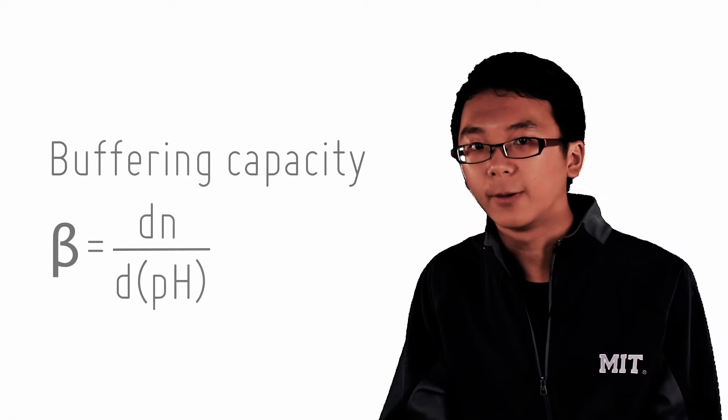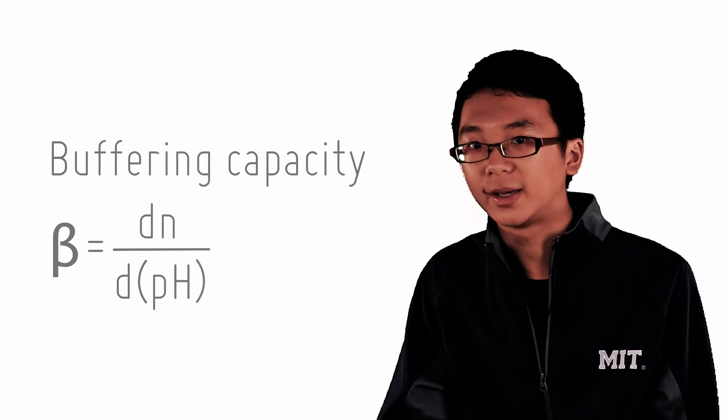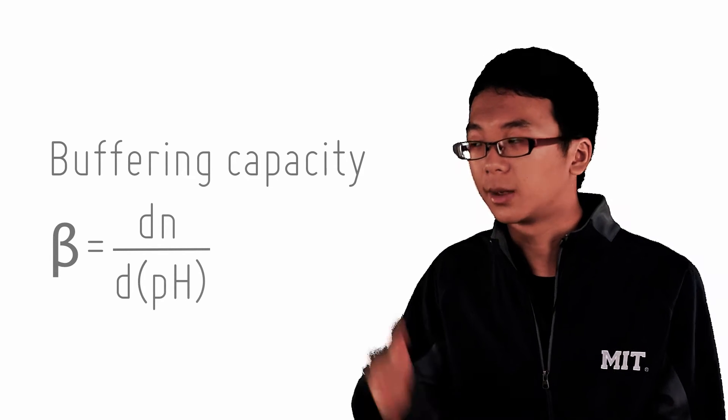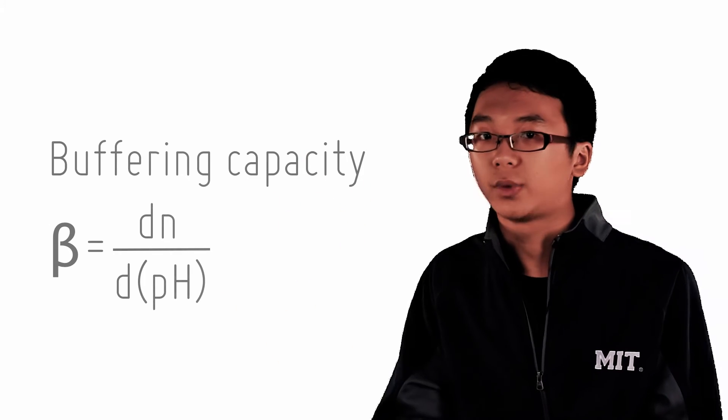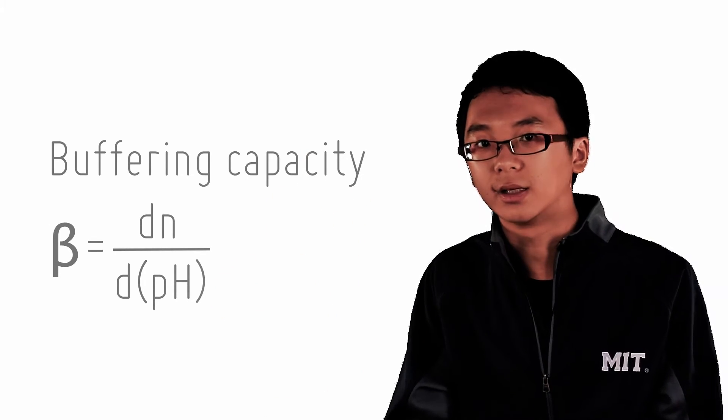That means if an acidic buffer has high resistance to pH change, pH change per mole of base added is low. The beta term hence becomes bigger. Because we take a constant divided by a small term and it reflects the buffering capacity of the buffer.